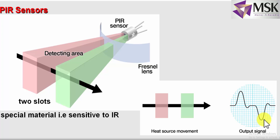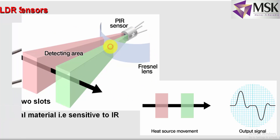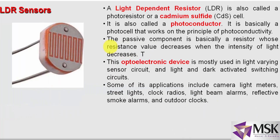The PIR sensor has two slots and it is made up of a special material which is sensitive to infrared. Next is the light dependent resistor — LDR. It is made up of cadmium sulphide and is also called a photo conductor. It works on the principle of photo conductivity. When light falls on the LDR, its resistance decreases. When the light is obstructed, its resistance increases. So the intensity of light is converted into a change in resistance. This is also an optoelectronic device because its resistance changes with light.